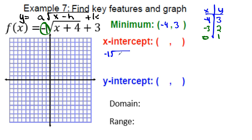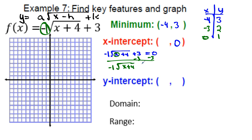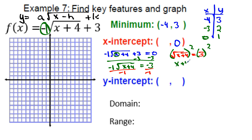For the x-intercept, set −√(x + 4) + 3 = 0. Subtract 3: −√(x + 4) = −3. Divide by −1: √(x + 4) = 3. Square both sides: x + 4 = 9. Subtract 4: x = 5. The x-intercept is (5, 0).